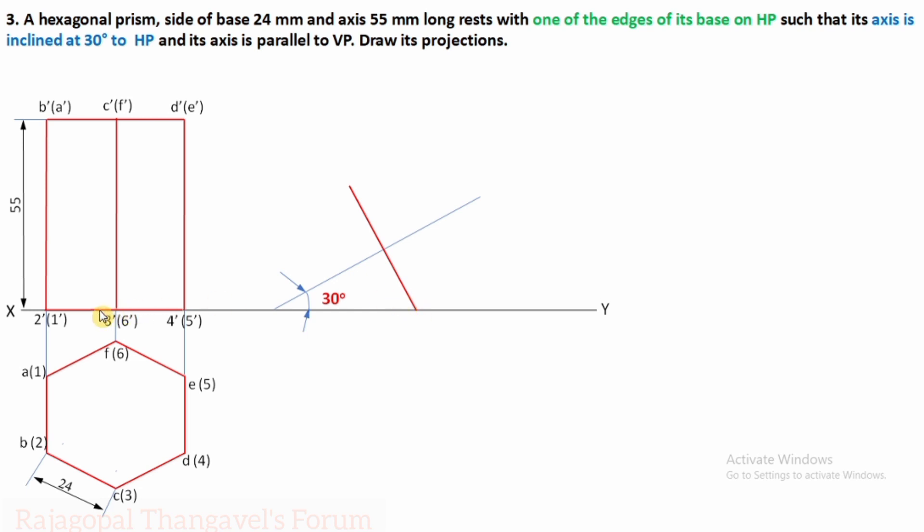If you want to make sure that it's touching XY, this length must be measured: 2 dash, 1 dash, to 4 dash, 5 dash length must be measured. If it's, say for an example, 40 mm, then here from the axis, 20 above and 20 below, that one edge must touch XY. It may not go above XY or below XY. And also the same way, this length must be exactly the same as this length.